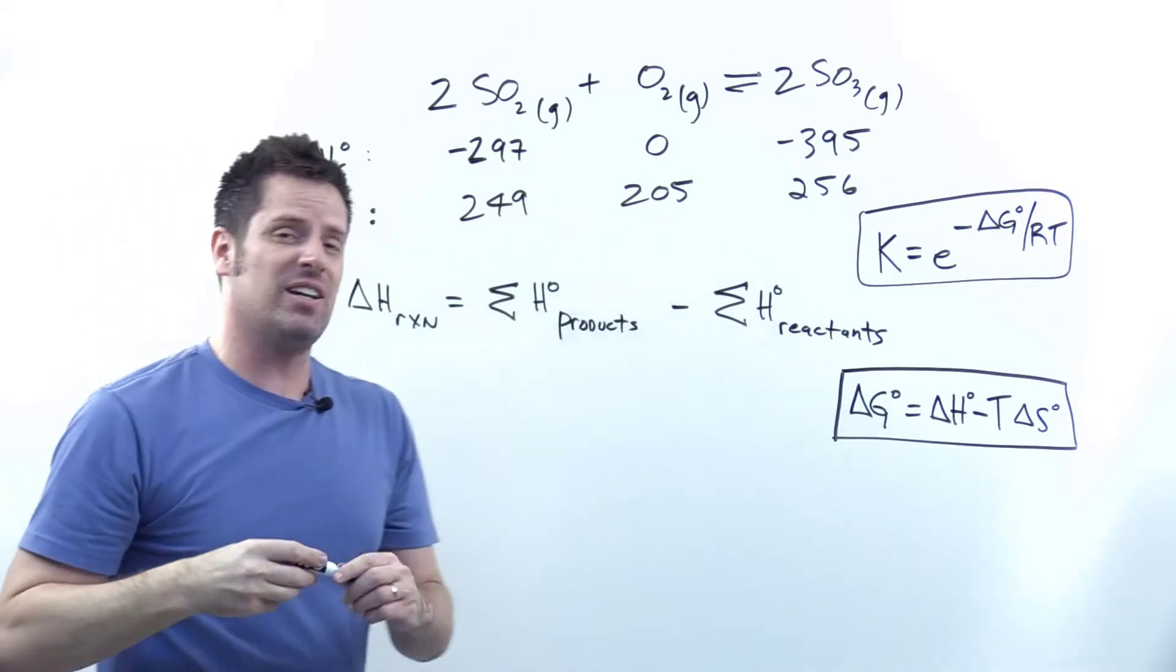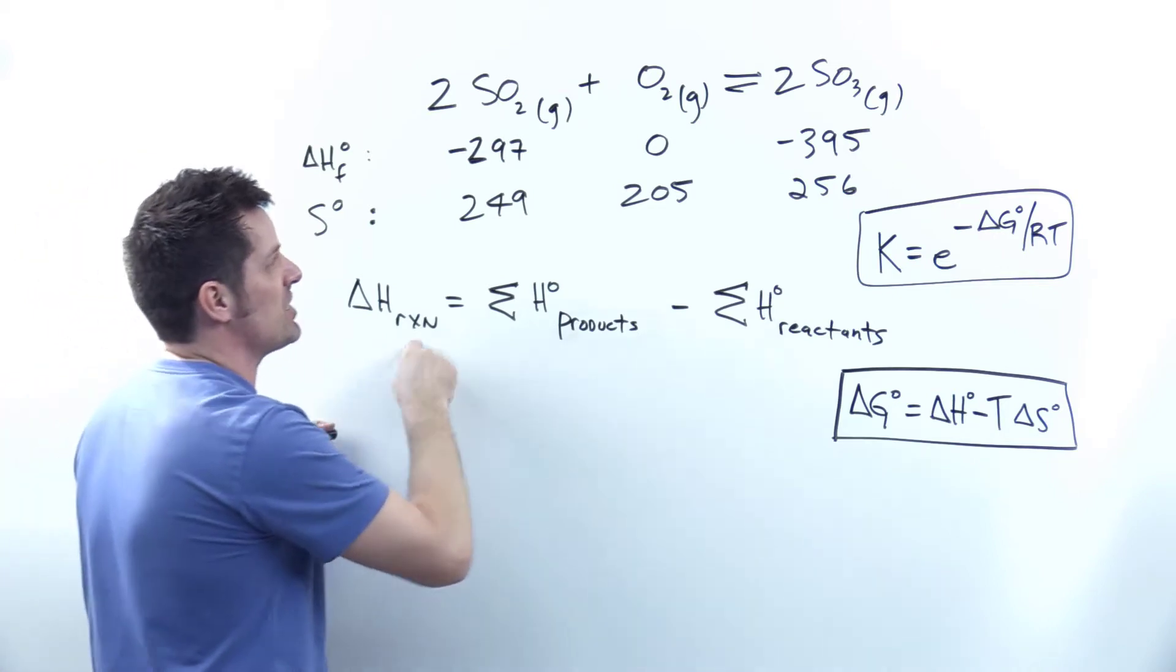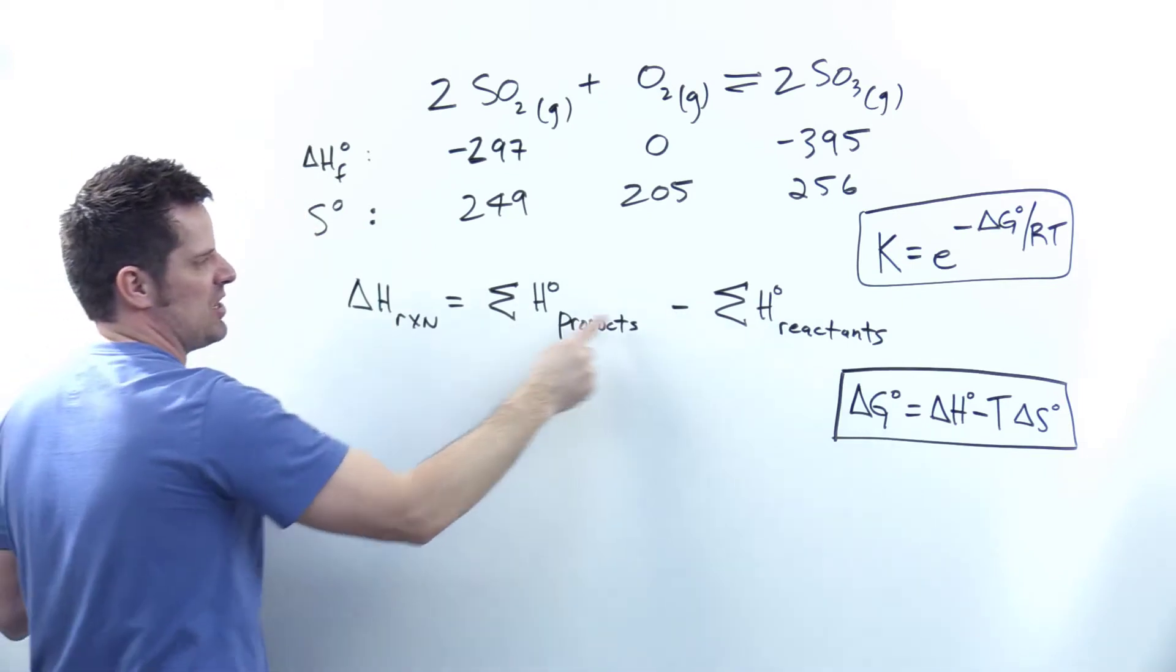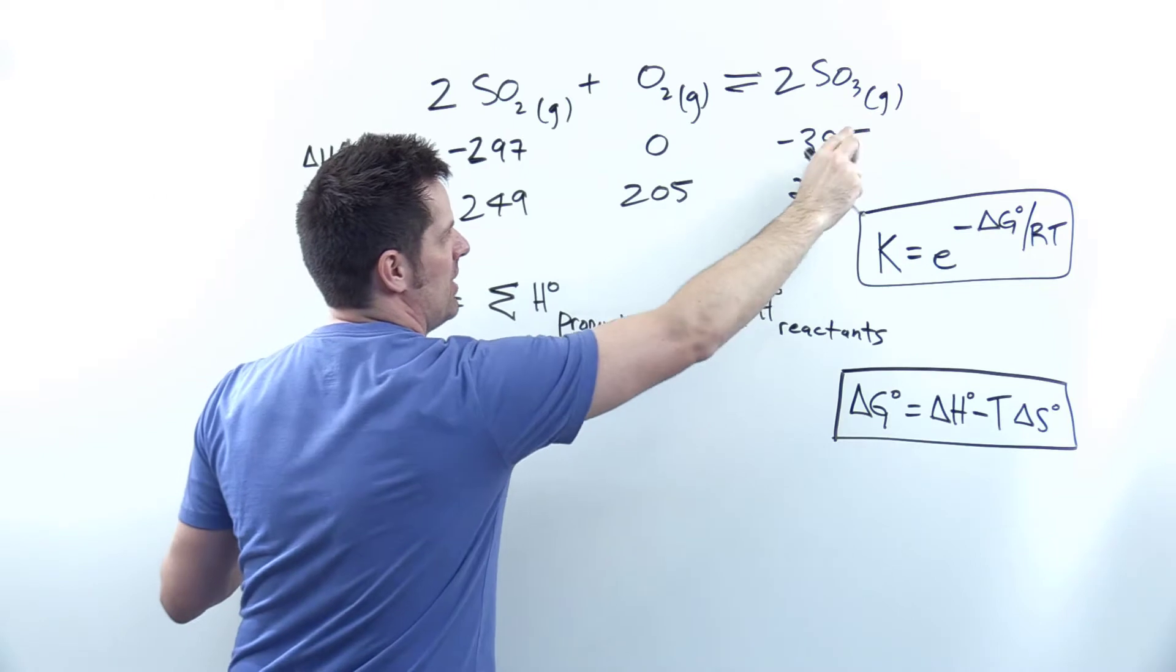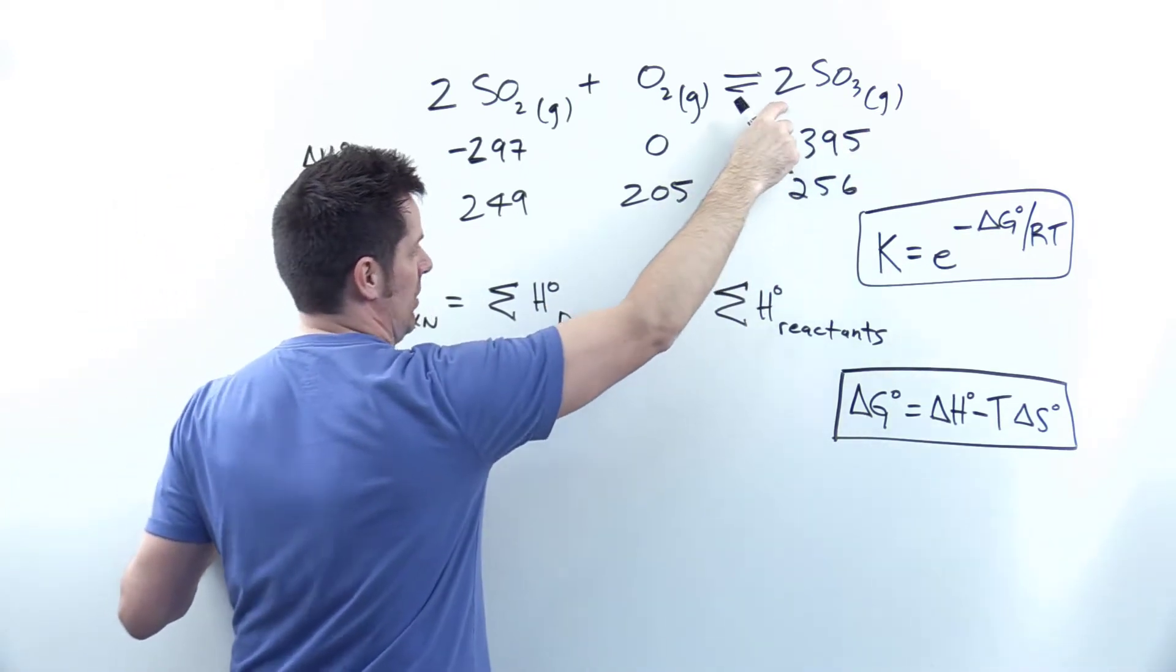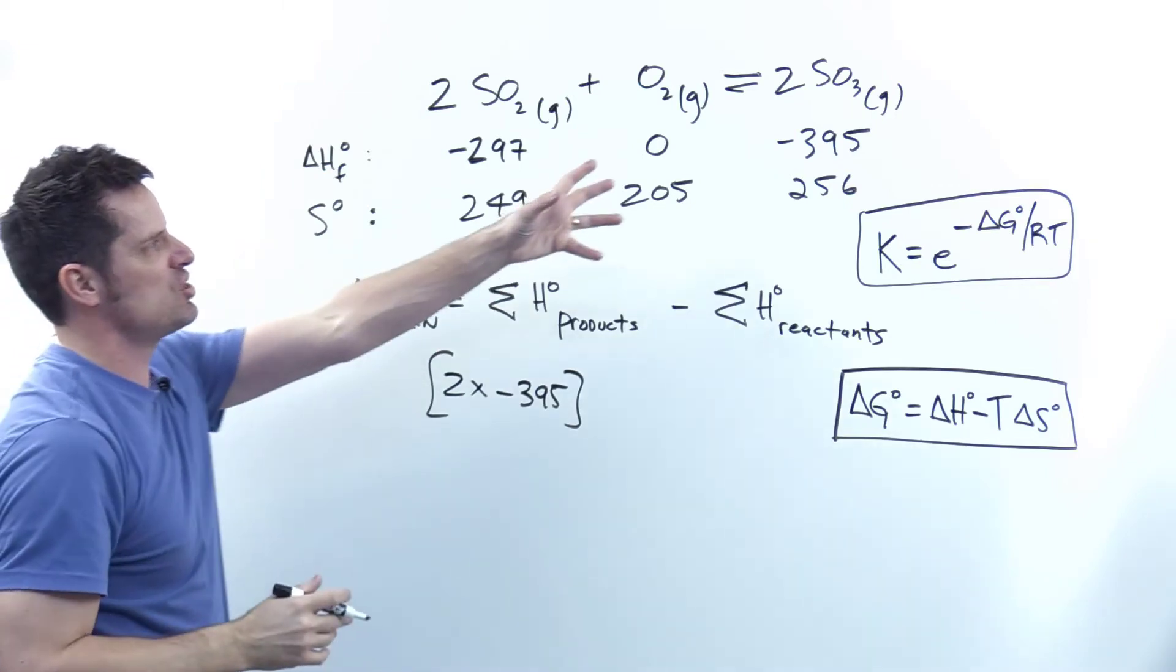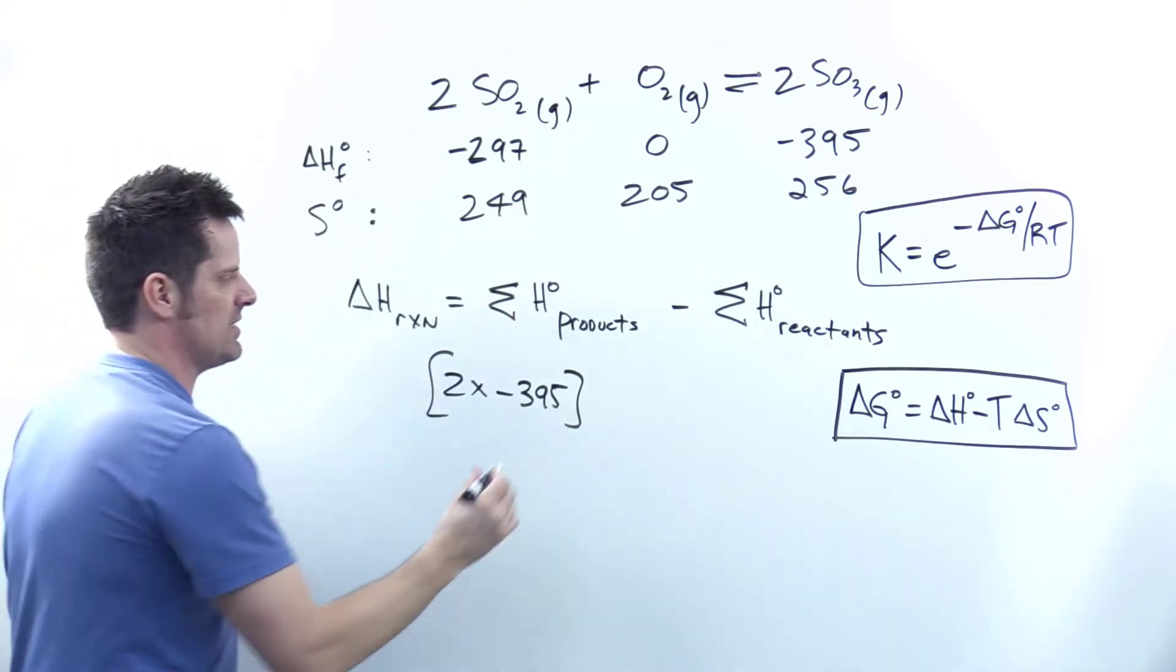To calculate delta H, we use this equation: delta H for the reaction equals the sum of H values for the products minus that of the reactants. On the right side, my products have negative 395, but with a coefficient of 2, so I multiply negative 395 by 2.